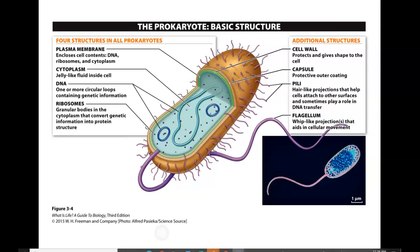Prokaryotes do not have organelles — organelles are little packages of machinery that work within the cell to perform a specific job. For example, mitochondria work on making energy and ATP. However, there is one exception: prokaryotes do have ribosomes — the little dots you see inside — which are very important because they take genetic information and make it into protein structures.